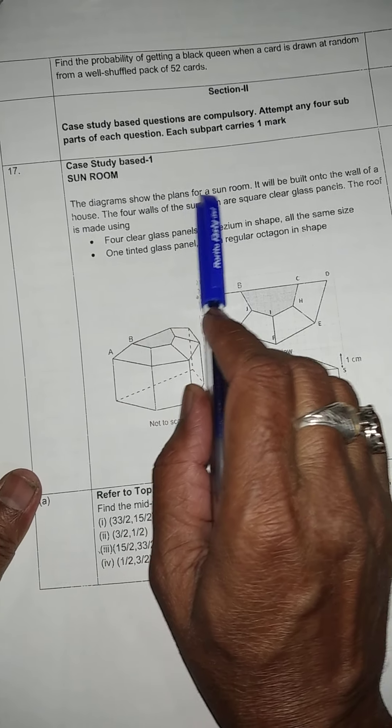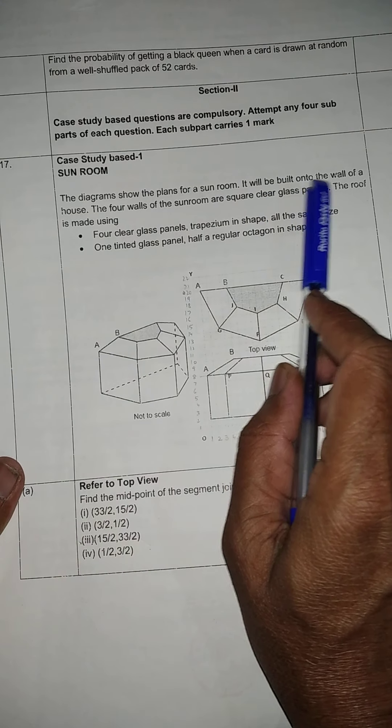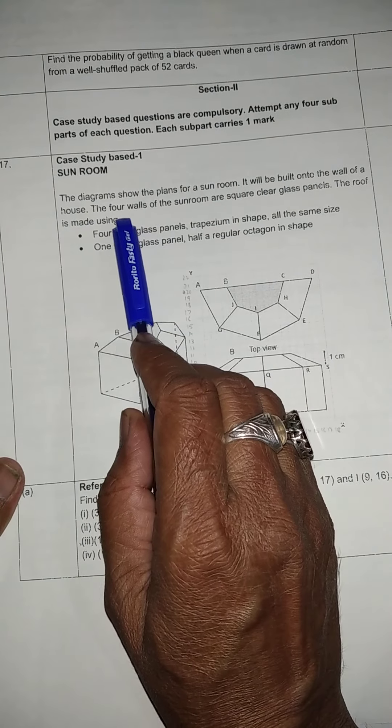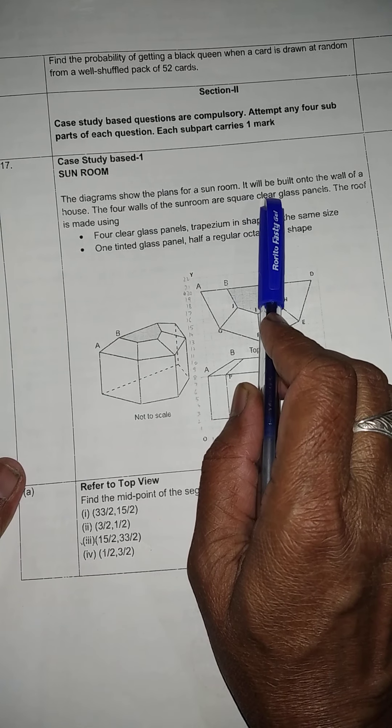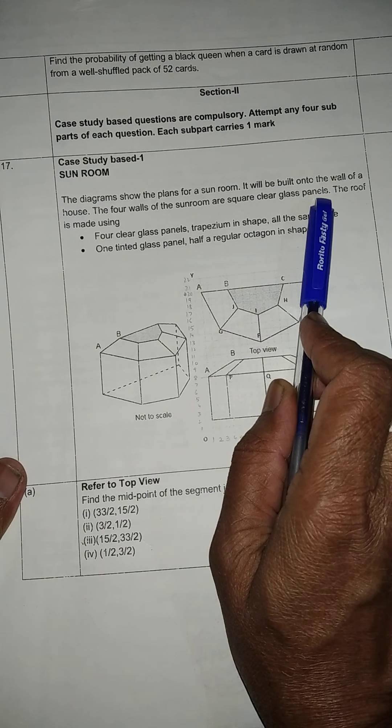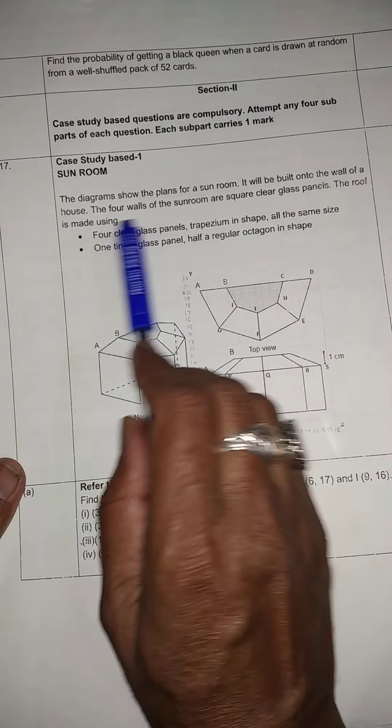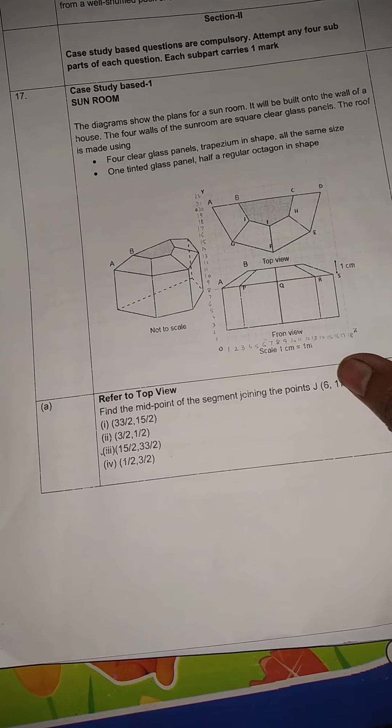The diagram shows the plans for a sunroom. It will be built on to the wall of a house. The four walls of the sunroom are square clear glass panes. The roof is made using this. Now what we have to do? Some questions they have given. We have to solve them.